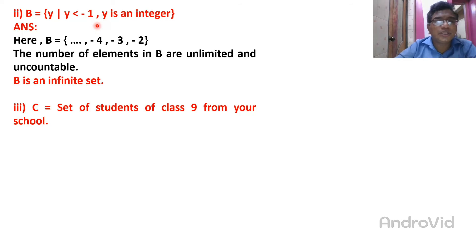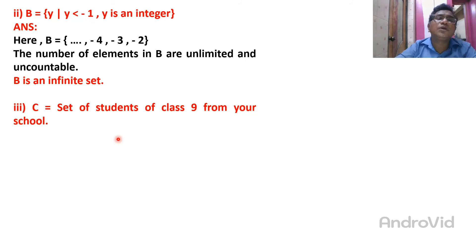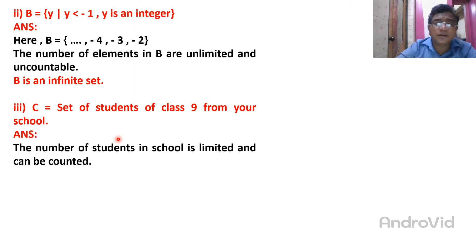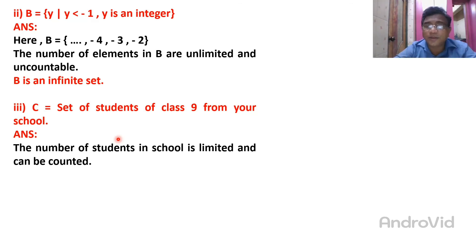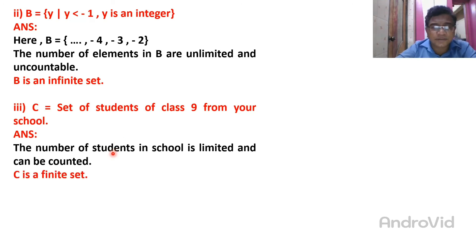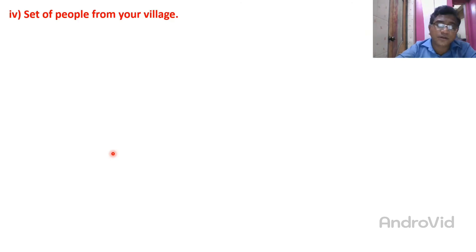Set C is the set of students of class 9 from your school. It is a finite set because the number of 9th standard students in your school is limited and easily countable. You can take a catalog and find out how many students are there and their names.